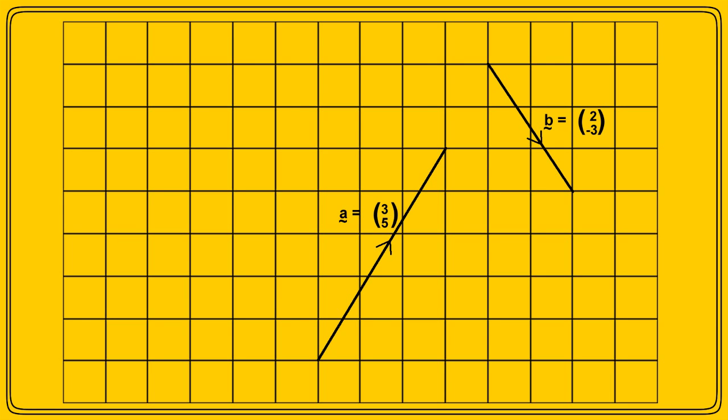Here's vector B, which is 2 over minus 3 — its horizontal component is 2 units to the right, and 3 units downwards, as the 3 is negative.